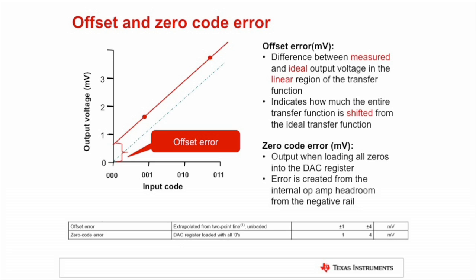Zero Code Error is also attributed to the output amplifier. It is the error caused by the output amplifier's headroom requirements near the positive and negative rails. It is measured by loading all zeros into the DAC data register and observing the difference between the output voltage and the ideal output voltage.